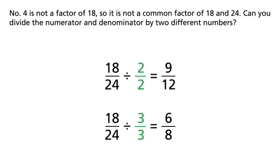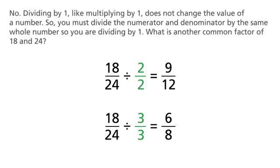Can you divide the numerator and denominator by two different numbers? No. Dividing by 1, like multiplying by 1, does not change the value of a number. So you must divide the numerator and denominator by the same whole number, so you are dividing by 1.